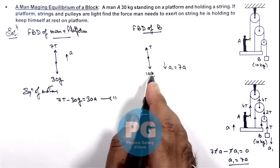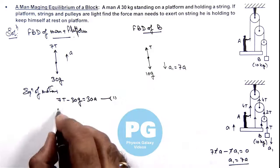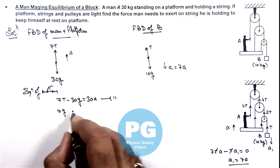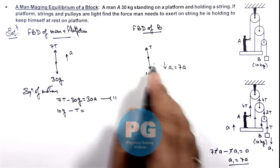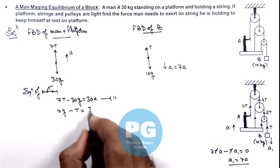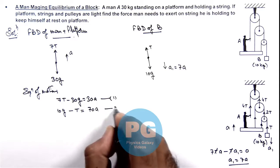For the motion of block in downward direction, we can write 10g minus T is equal to 10 times 7ay, so this will be 70ay. This is our second equation.